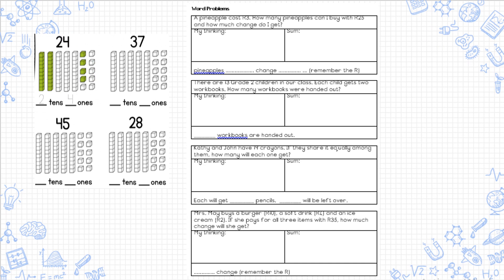For place value, I give you a number and a lot of blocks. You have to go and color in the amount of blocks using your tens and units. I did 24 as an example. 24 I break up into two tens and four units, so I colored two ten strips and four unit blocks.